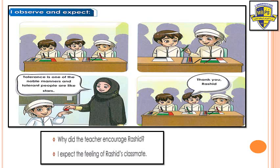Look at these pictures. What can you see in the first one? They are coloring — all of them are coloring. But Rashid shares with his friend. Rashid shares, and his friend told him, "Thank you, Rashid." Then the teacher encouraged Rashid. She said tolerance is one of the noble manners, and tolerant people are like stars. If you are tolerant, you are like stars in the sky. The teacher encouraged Rashid because he shared his colors with his friend.